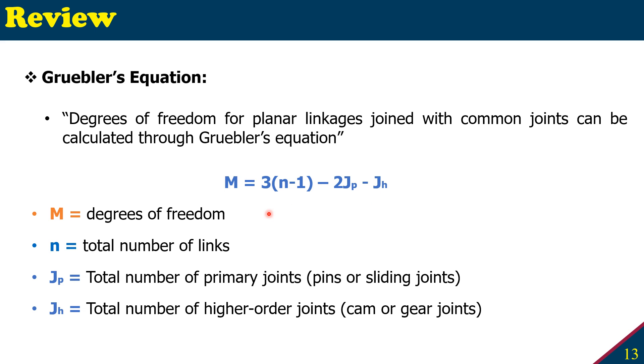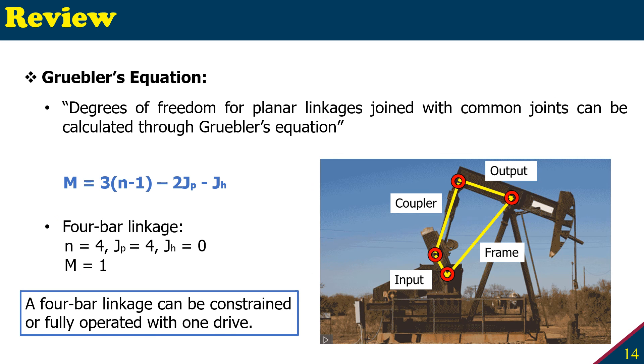So let's apply this formula to our four bar linkage. For four bar linkage, if we again look at this mechanism here, we have n, total number of links 4, primary joints, those are pin joints 4, there are no cams or gears so JH is 0. That leaves us M equals to 1. What is the application of this?